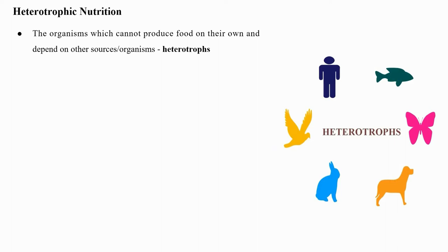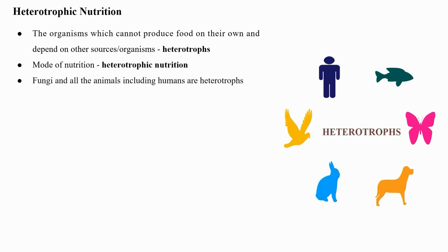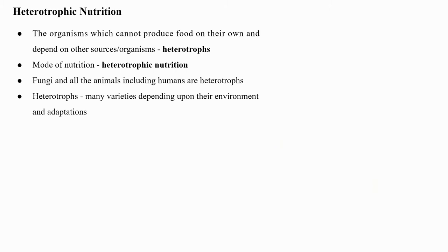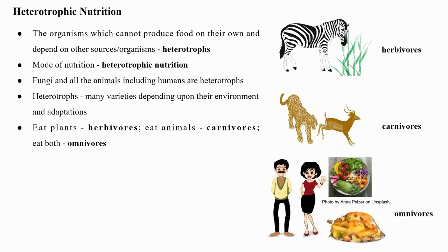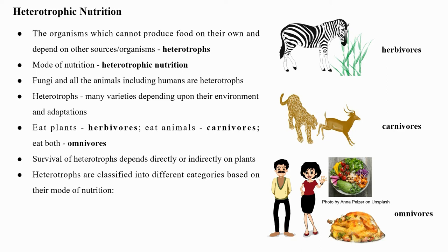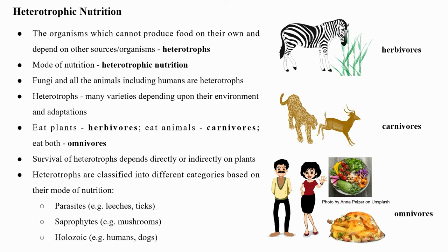Fungi and all animals including humans are heterotrophs. Heterotrophs can be of many varieties depending upon their environment and adaptations: some may eat plants (herbivores), others eat animals (carnivores), while few eat both (omnivores). Thus, survival of heterotrophs depends directly or indirectly on plants. Heterotrophs are classified into different categories: parasites (e.g., leeches, ticks), saprophytes (e.g., mushrooms), and holozoic (e.g., humans, dogs).